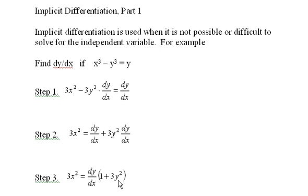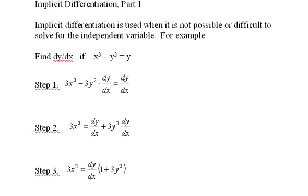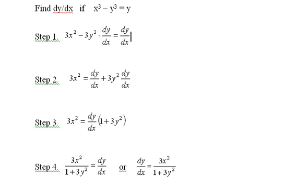The last thing I'm going to do is divide both sides of the equation by 1 plus 3y². And when I do that I have step four here and I end up with this expression, or a little more formally here. We have dy/dx equals 3x² over 1 plus 3y².